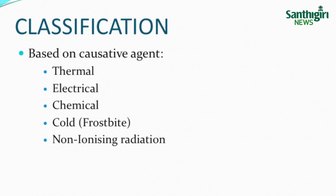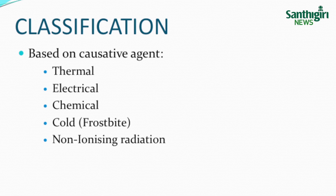Classification of burns is based on causative agent. First, thermal burns: injury due to heat, classified as moist heat such as scalds, and dry heat or contact burns. Second, electrical burns: injury due to passage of electricity. Third, chemical burns: injury due to contact with chemicals. Fourth, cold or frostbite: injury due to exposure to extreme cold. Fifth, non-ionizing radiation: injury due to exposure to non-ionizing radiation such as ultraviolet rays or infrared rays.